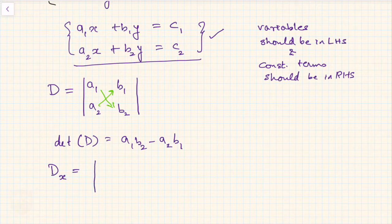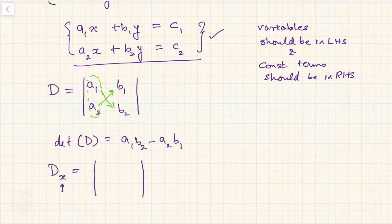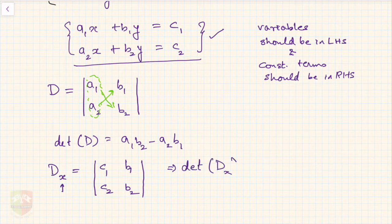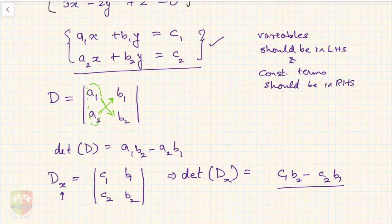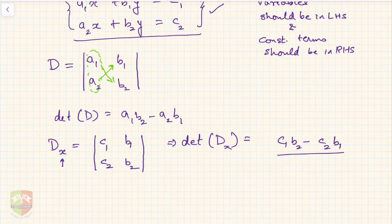Now I am defining another determinant Dx. To form Dx, take determinant D and replace the coefficients of x — that is a₁ and a₂ — with the constant terms c₁ and c₂, keeping the other column as it is. The value of Dx is therefore c₁b₂ minus c₂b₁.